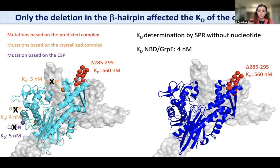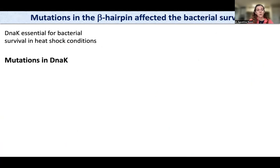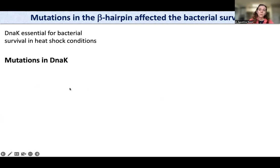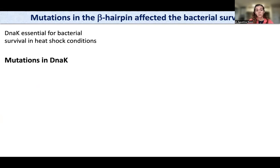We wanted to study this subdomain in more detail and moved forward by employing in vivo assays as an initial test, since we wanted to analyze several mutants. For the in vivo experiments, DnaK is essential for bacterial survival in heat shock conditions. So we designed all of these mutations in DnaK and tested them under heat shock conditions.